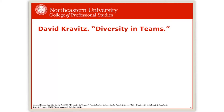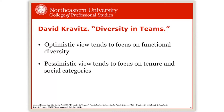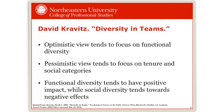The first article is by David Kravitz. His article on diversity in teams finds that when people look at diversity, the optimistic view tends to focus on functional diversity — seeing the greatest value there — while the pessimistic view tends to focus on social diversity. Kravitz concludes that functional diversity tends to have a positive impact, while social diversity tends to have negative effects.